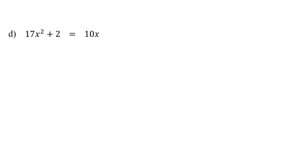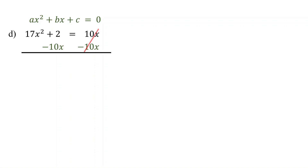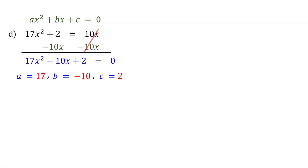Finally, let's consider a case where a quadratic equation has no real solutions. In the previous three examples, the quadratic equations were given in standard form. However, in this example, it is not. To use the quadratic formula, the equation must be written in standard form, so our initial step is to rewrite it by subtracting 10x from both sides. Then identify the coefficients: a is 17, b is negative 10, and c is 2.